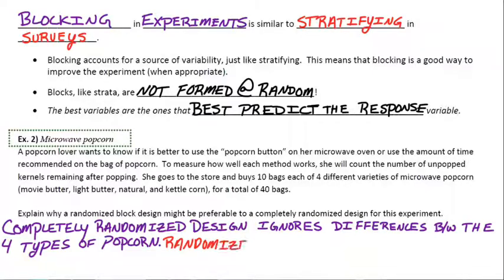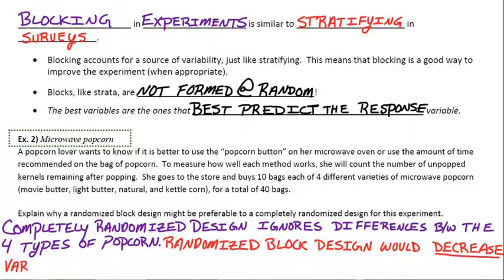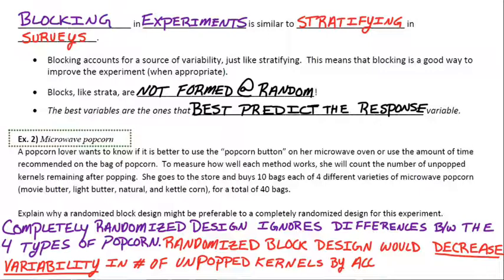So what would a randomized block design do? So if we block by the type of popcorn, that would decrease variability. That would decrease variability in the number of unpopped kernels because it accounts for each type of popcorn. So we aren't going to see a great amount of variability just because we have different types. If we look at each type separately, if we block by type and we look at the unpopped, like we compare them to their own brand or their own type,